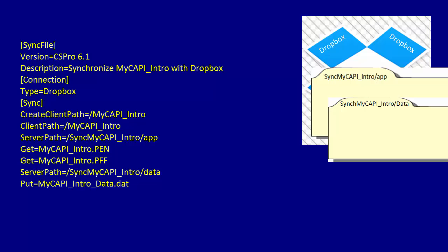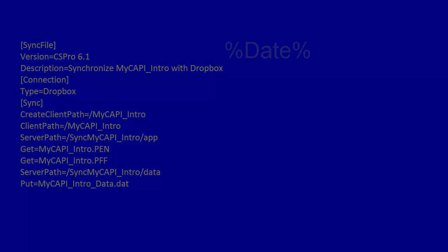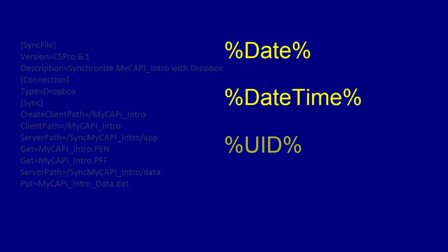Here we show the complete .pnc file based on these specifications. If multiple users use this synchronization, the second synchronization will replace the first sent. To avoid this problem, specify different directories on the server for each user. %DATE%, %DATETIME%, %UID%, or %DeviceId% can be included in the directory name.